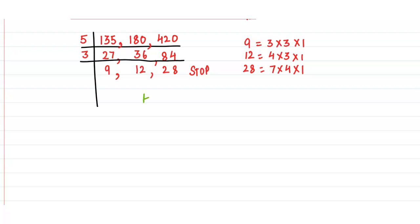So we get the HCF. The HCF is 5 times 3, which is 15. That means the 3 numbers 135, 180, and 420 have 15 as their highest common factor. When divided by 15, the remainder is going to be 0.